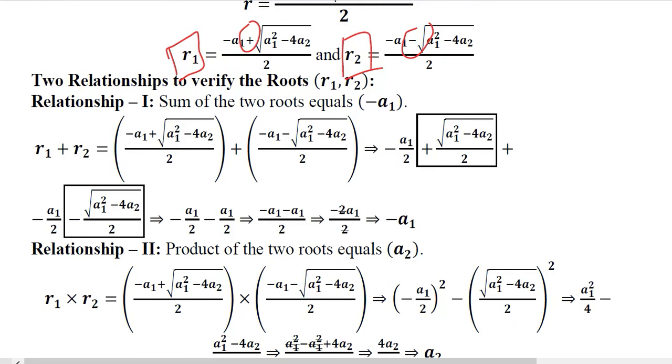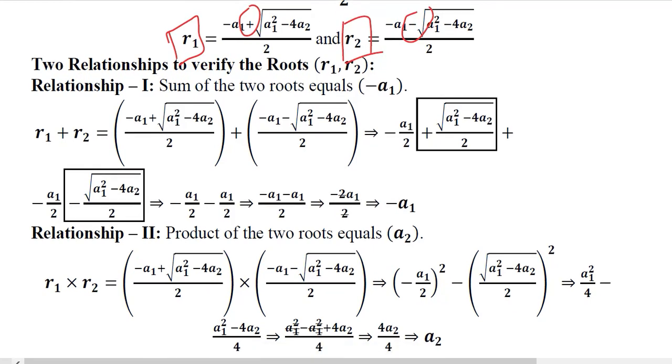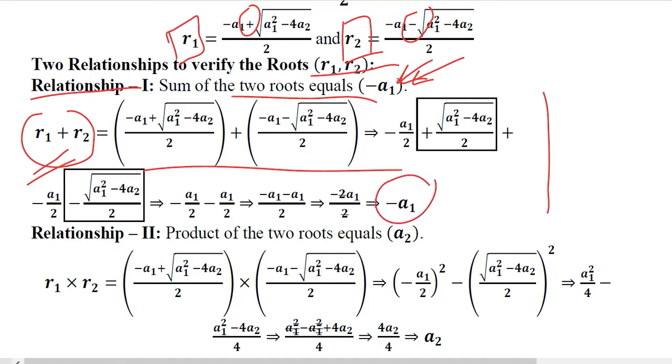The two relationships to verify the roots are these, that is R1 and R2. Relationship one: sum of the two roots equal to minus A1. Now this is a good formula that can help us to verify if the roots that we have found are correct because when we take the sum of the roots it should equal negative of A1. Here these steps are performed and you can pause the video and see the answer will be equal to the negative of A1.